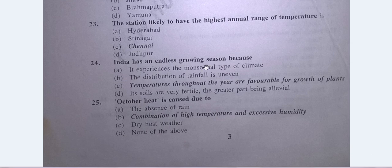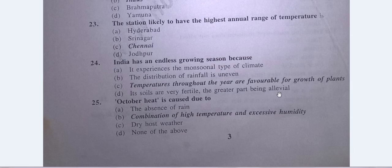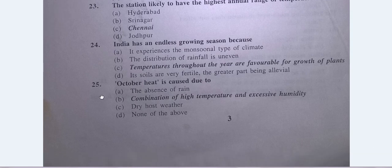India has an endless growing season because temperatures throughout the year are favorable for the growth of plants. The distribution of rainfall is uneven. The answer is: temperatures throughout the year are favorable for the growth of plants.